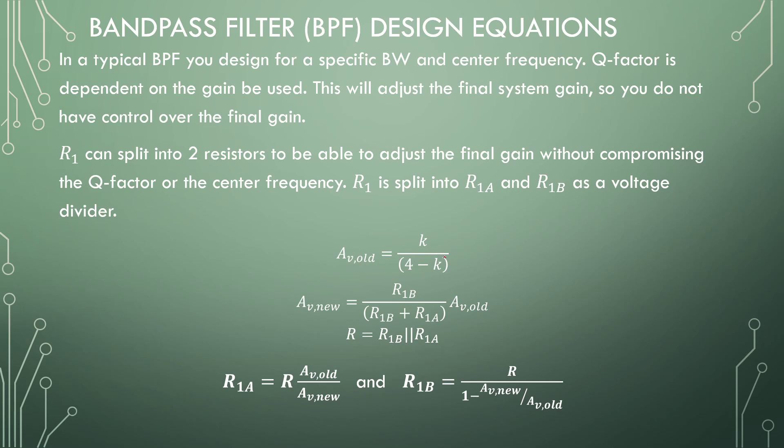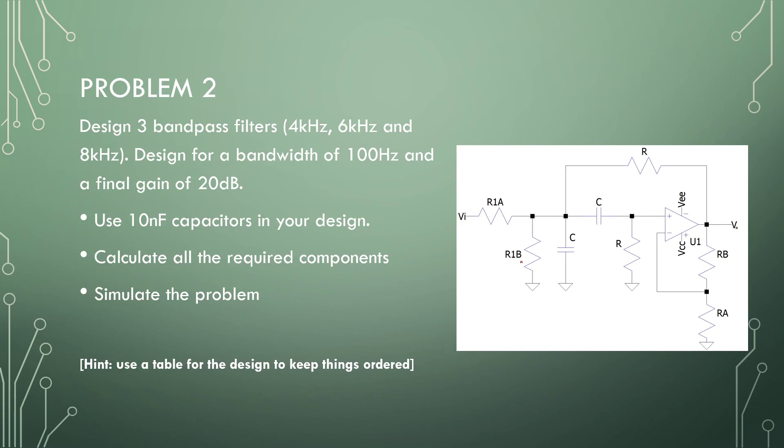So the next problem that we are going to look at is going to include these two input resistors. So R1 is now split into R1A and R1B which is there to fix the gain. This RC network is for the frequency and RA and RB is for the Q-factor.